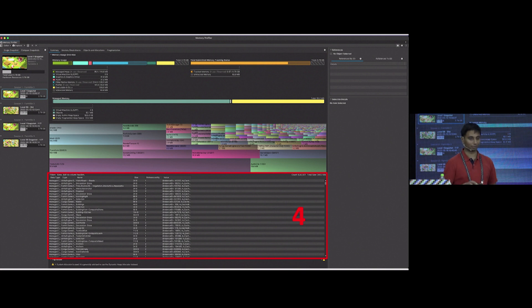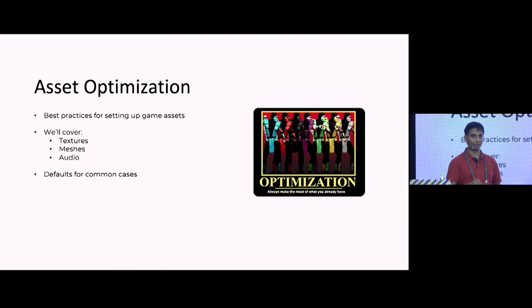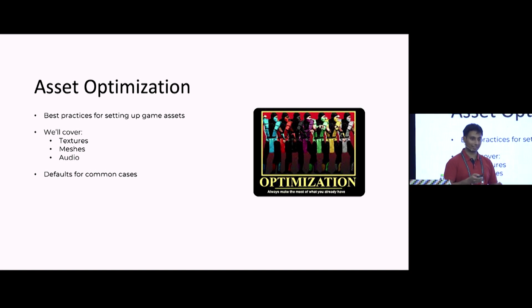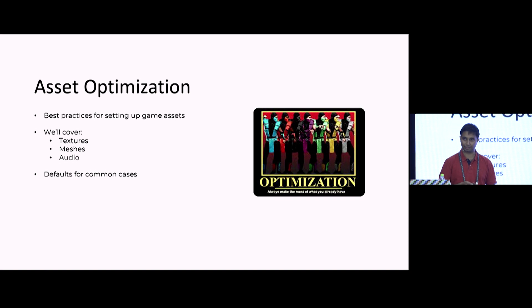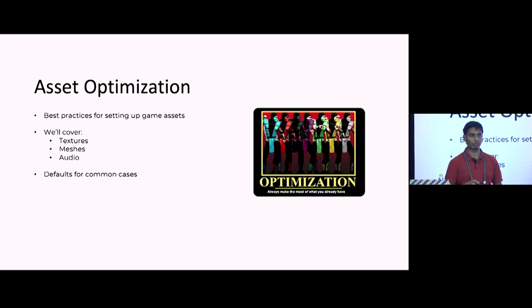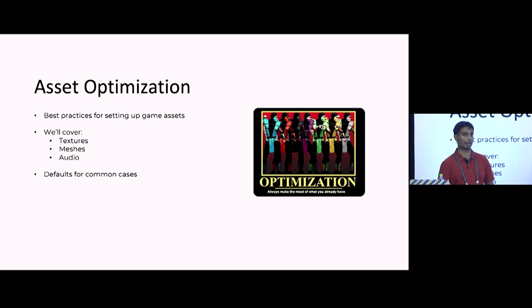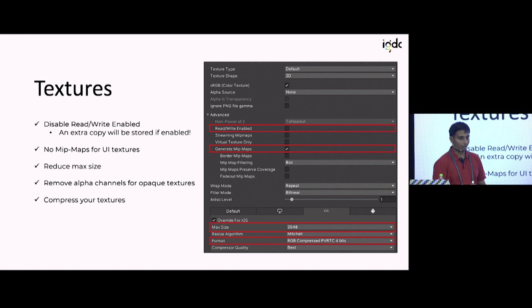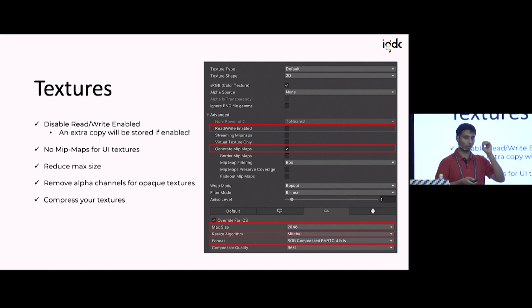Now that you know how the profiler works, let's move on to asset optimization. These are best practices we've learned over the years — very tiny things, easy to miss, but they've helped us a lot to keep down memory usage and optimize for adding as much content as possible. I'll start with textures.